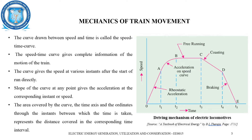The mechanics of train movement, or the driving mechanism of electric locomotives, can be studied based upon the timings. Let us consider the 5 sections of timings in the speed-time curve and study the speed of the train with respect to each timing. This will give complete information about the motion of the train.